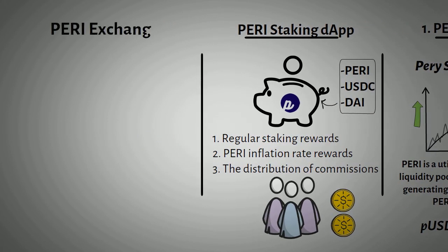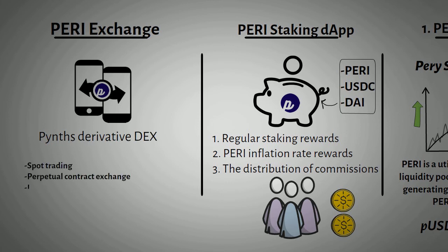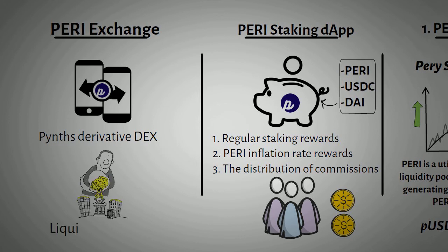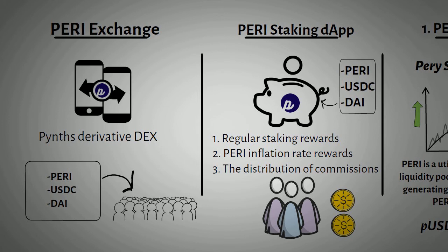Thirdly is the Puri Exchange. Puri Exchange is a PINTHs derivative DEX where users can trade a variety of financial assets. Puri Exchange offers spot trading as well as perpetual contract exchange, and users can invest PINTHs for long or short positions with up to 20x leverage. Puri Exchange doesn't need any liquidity provider. For the transaction of converting PINTHs, the counterparty is the debt pool collateralized by Puri, USDC, and DAI staked by the holders. So the liquidity available in the pool is infinite and no slippage exists.